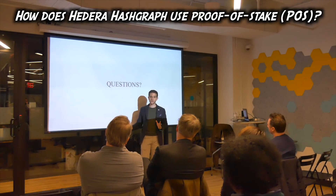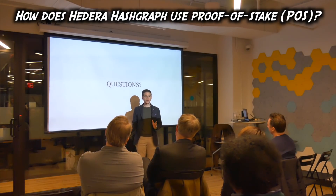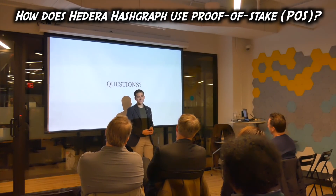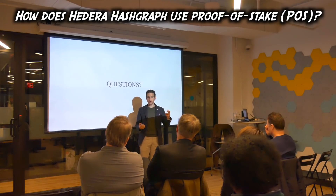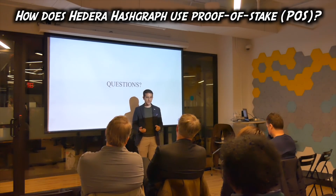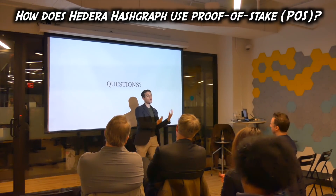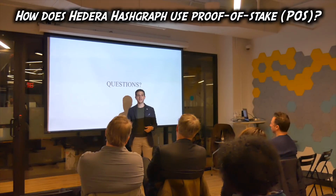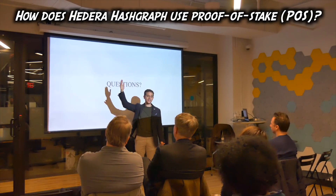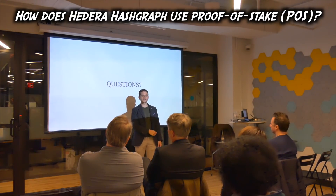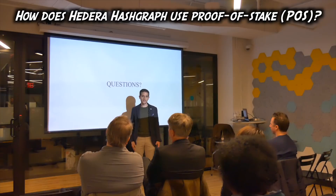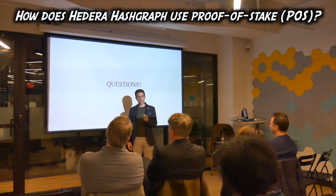If you do one node, one vote, you're vulnerable to a class of attack called Sybil attack. A Sybil attack is when a bad actor can take 10,000 nodes — probably VPSs or Digital Ocean instances — throw them onto the network and say, I have 10,000 votes, and you disrupt consensus. You ruin the whole network.